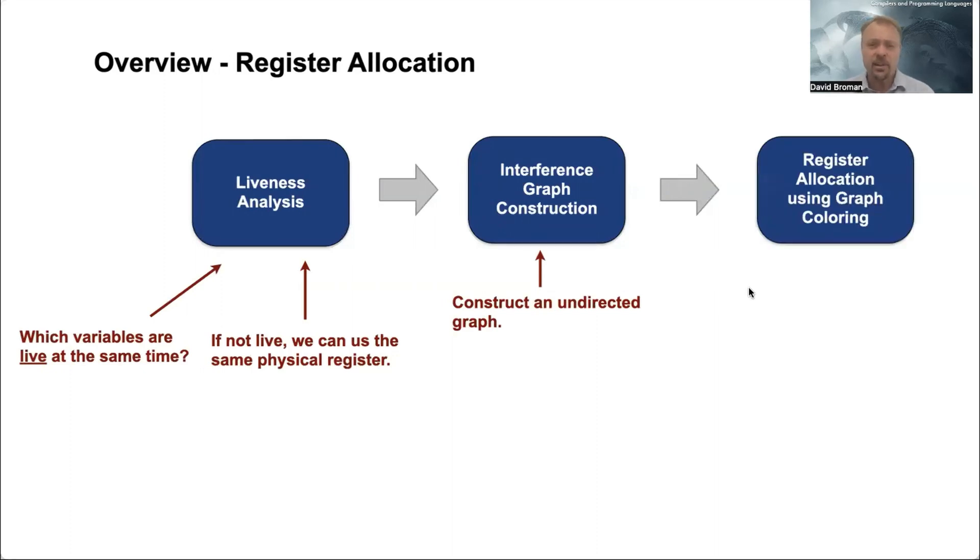And this is today's video: register allocation using graph coloring. The idea is that we basically want to color all the nodes in the graph such that no neighbors have the same color. This is called the graph coloring problem.